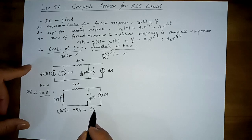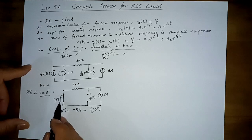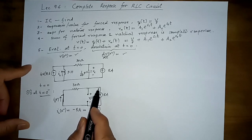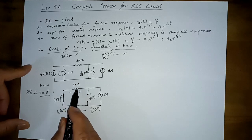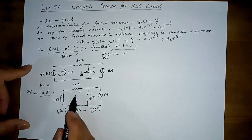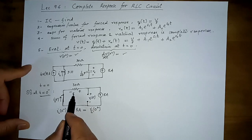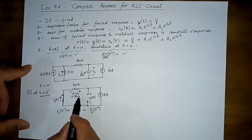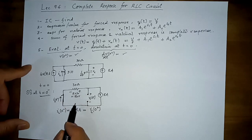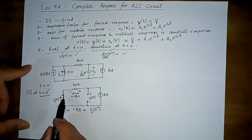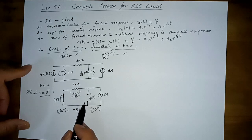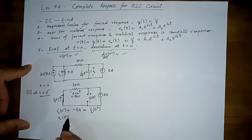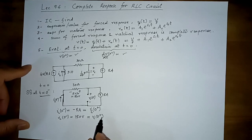IL at 0⁻ is easily seen to be minus 5 amperes, and this same current flows after t = 0 due to the inductor's property of not allowing a sudden change. This current flows through the 30-ohm resistor, creating a voltage of 5 × 30 = 150 volts. Applying KVL, we get VC(0⁻) = 150 volts, which also holds at t = 0⁺.